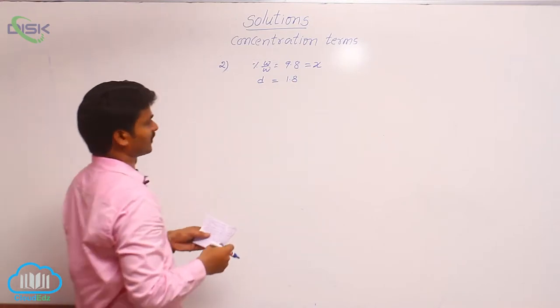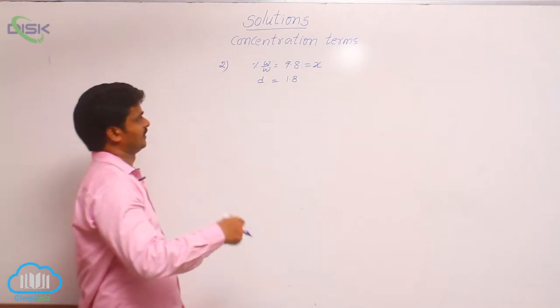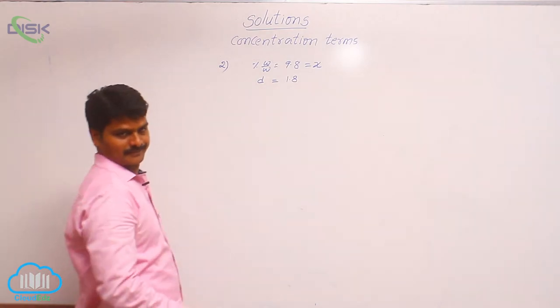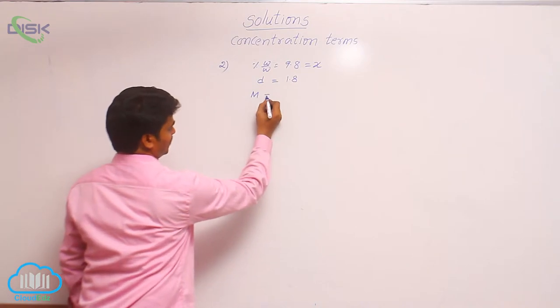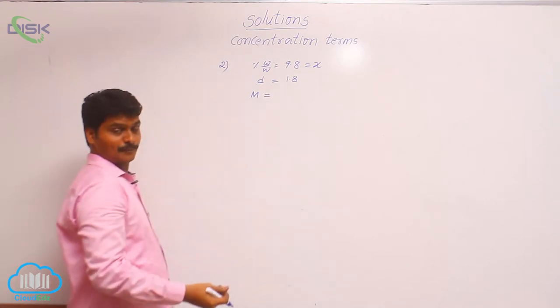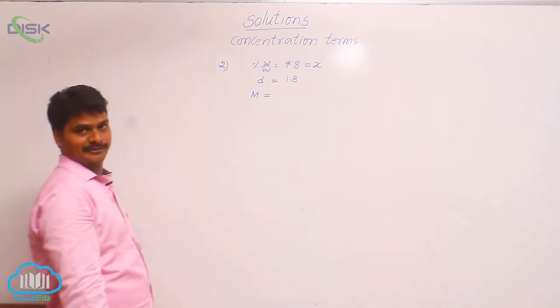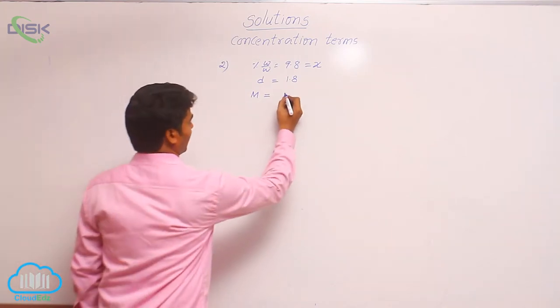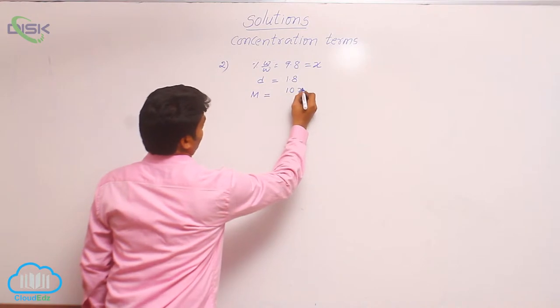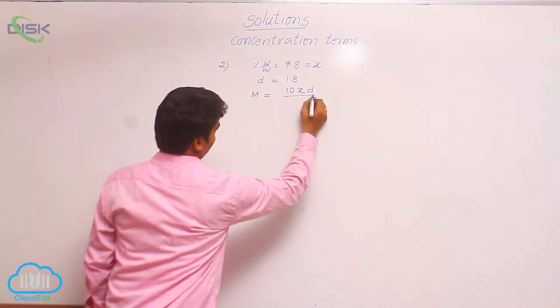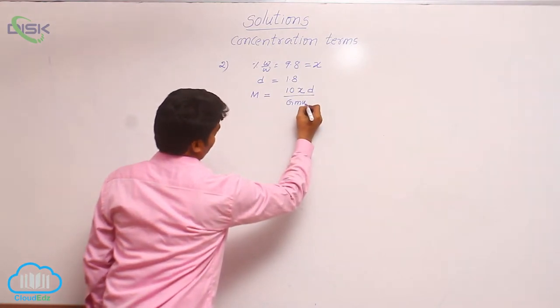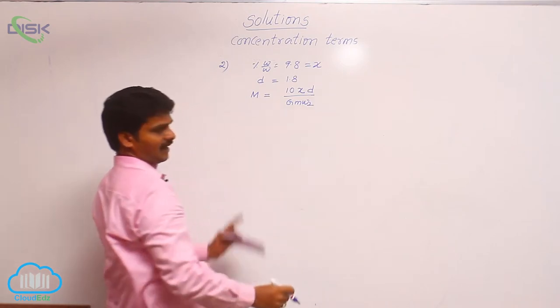So, using this information, first let us calculate molarity. I had given previously direct formula for molarity if both density and X percentage W by W is given. What is the formula? 10 into X into density by gram molecular weight of solute. This is the formula I had given earlier.